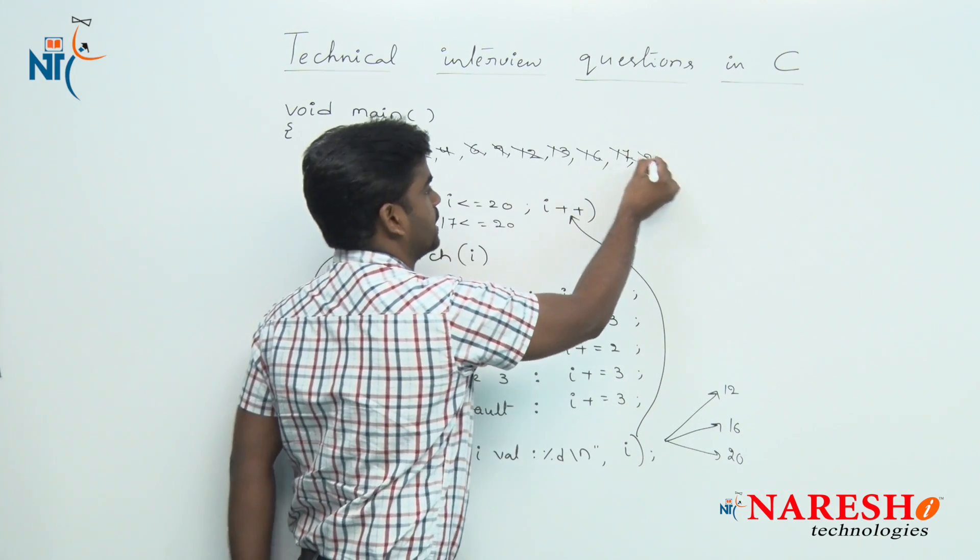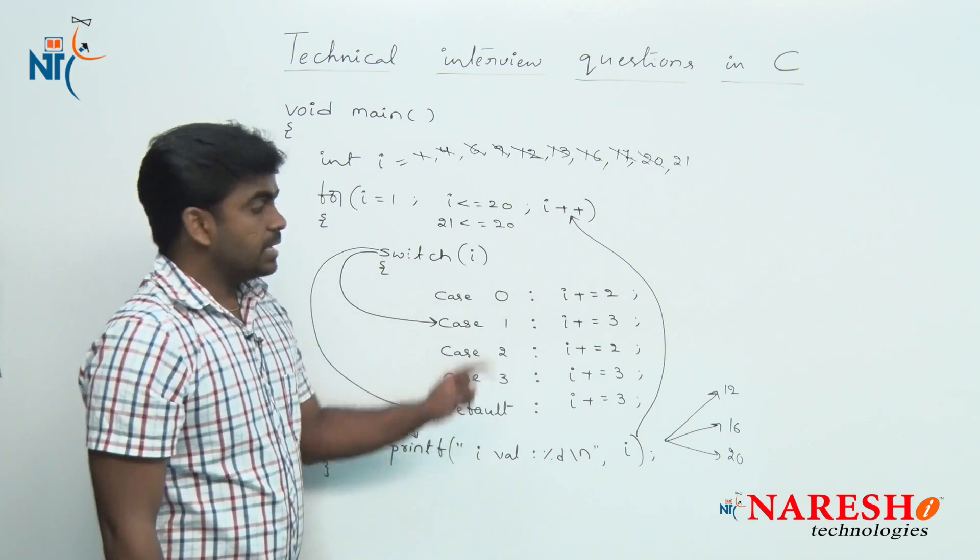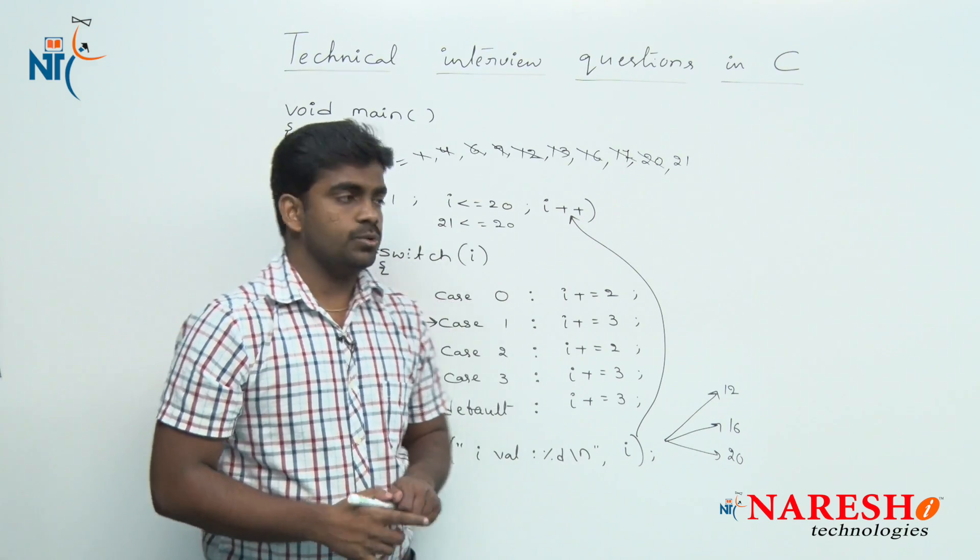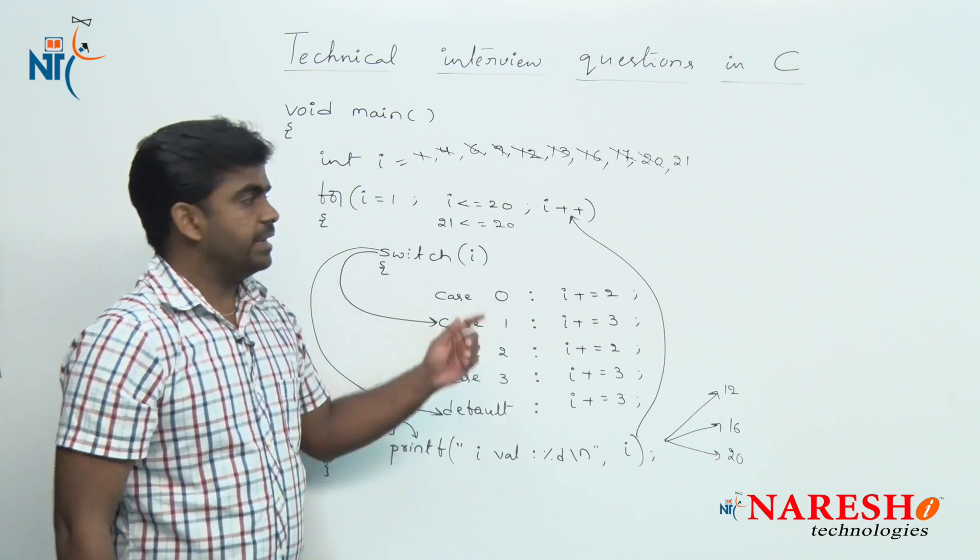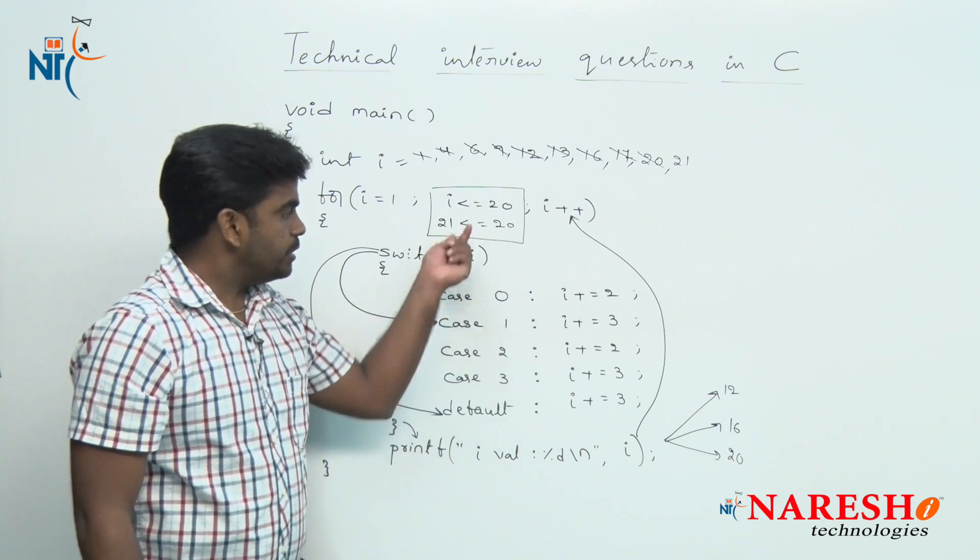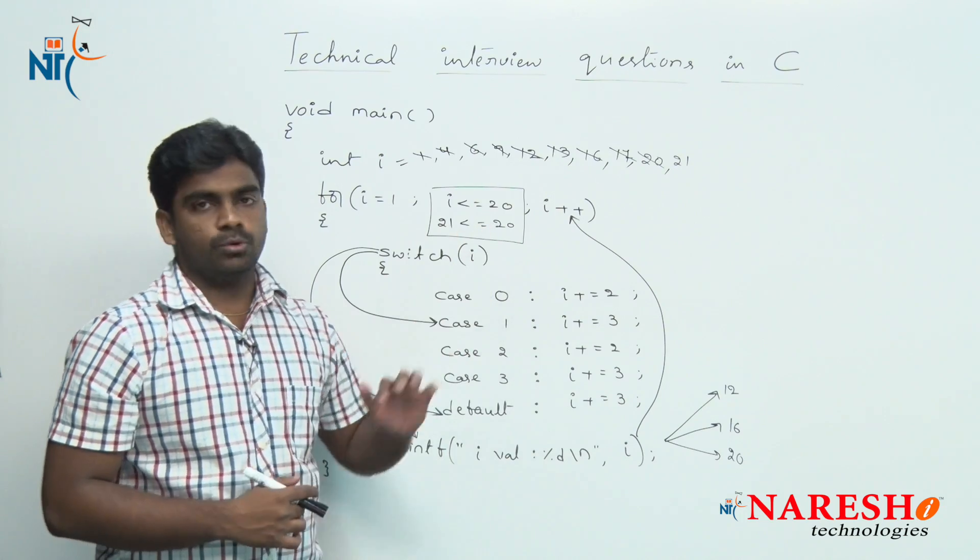Now the value will be substituted: 21 is less than or equals to 20, the condition has failed. It terminates the program. Whenever this outer condition has failed, the control will not go inside and execute the switch case.